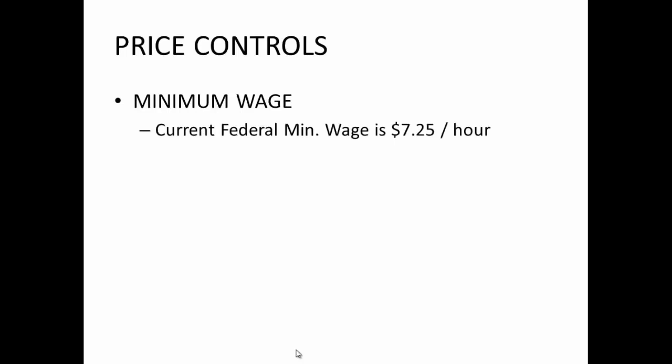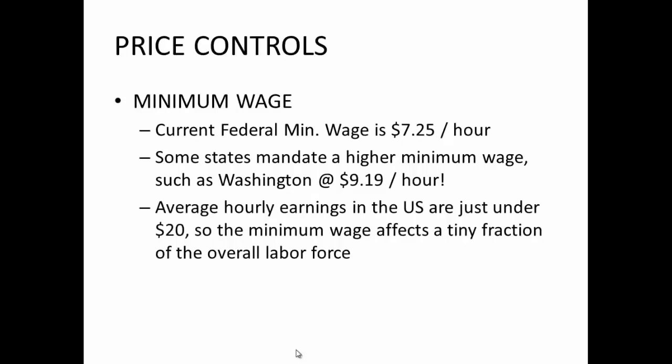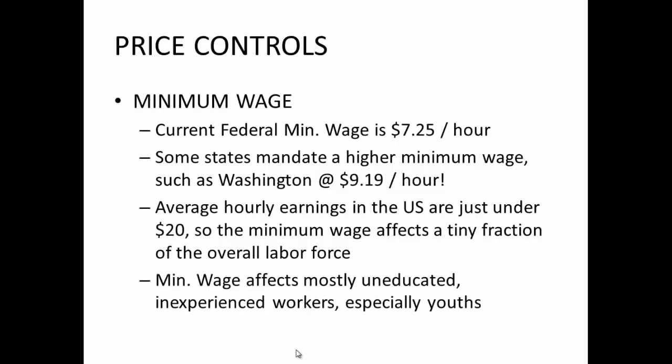As a price floor on labor, we predict that the minimum wage will cause a surplus of labor — known in economics as unemployment — and a reduction of total surplus in some labor markets. Fortunately, the vast majority of workers in the U.S. earn well more than the current federal minimum wage of $7.25 an hour. According to the St. Louis Fed, average hourly earnings were just under $20 per hour in the U.S. in 2012. Therefore, the minimum wage is a non-binding price control for most American workers. The workers most affected by the minimum wage would be those who do not have a high market value to begin with.